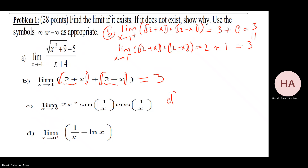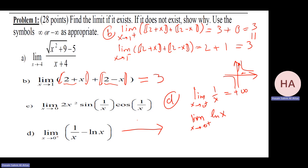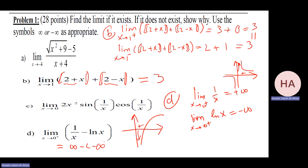Part d: notice the limit as x goes to zero from the right of one over x goes to plus infinity. The limit as x goes to zero from the right of the natural log of x goes to minus infinity. So the expression is infinity minus minus infinity, which is infinity plus infinity, which equals infinity.